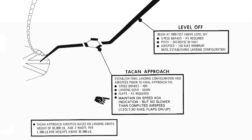In the TACAN Approach phase, final landing configuration and airspeed is established prior to the final approach fix. The final approach fix is the approximate position of the outer marker, which in this case is 5 miles from the TACAN Station and the Senaki Kolki Airfield. Flaps are down, landing gear extended, and indicators checked.